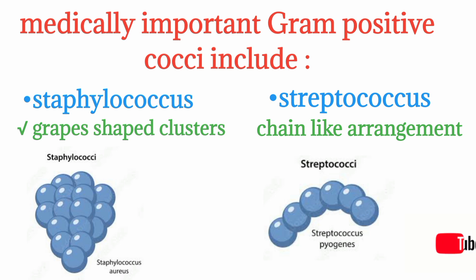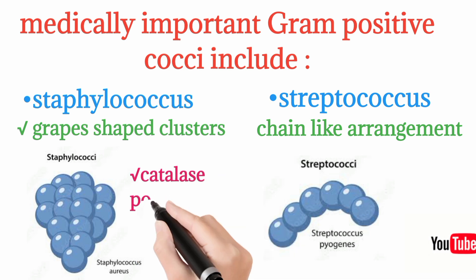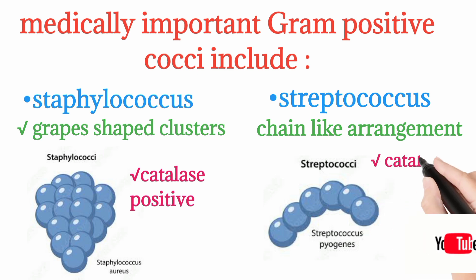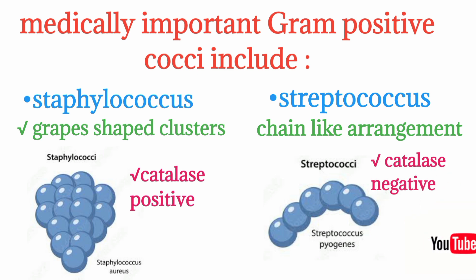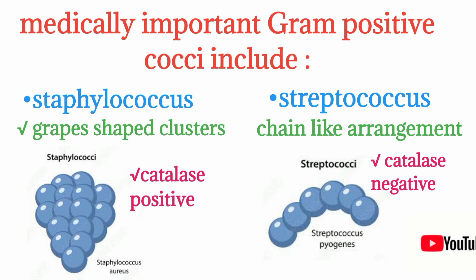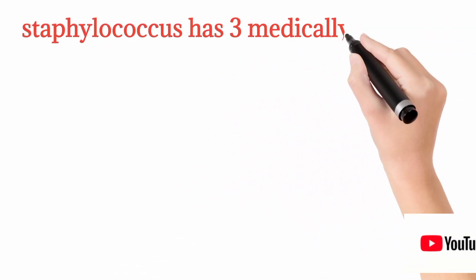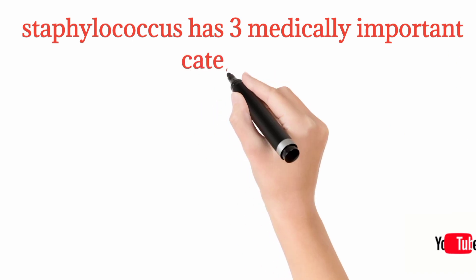Staphylococcus produces catalase enzyme, so it is catalase positive. Streptococcus does not produce catalase, so it is catalase negative. The key differences are: Staphylococcus has grape-shaped cluster arrangement and is catalase positive, whereas Streptococcus has chain-like arrangement and is catalase negative.